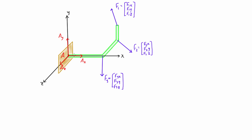The first three reactions are the force reactions: Ax, Ay, and Az. The other three are the moment or couple reactions: MAx, MAy, and MAz. If this is a fixed rigid connection, it will provide all six. If it's a ball-and-socket connection, it will only provide the three force reactions and none of the couple reactions. If it's a hinge, it will be some combination depending on which way the hinge axis lines up.